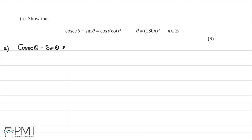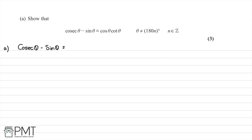In this question, we're asked to show that cosec theta minus sine theta is equivalent to cos theta multiplied by cot theta, and this is for three marks. What we're going to do is take the left hand side and use trig identities to manipulate our expression to eventually arrive at the right hand side. I've copied our left hand side down here, and we'll now write down our first trig identity.